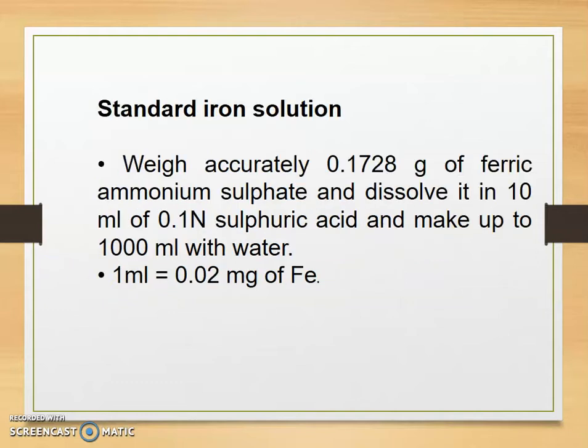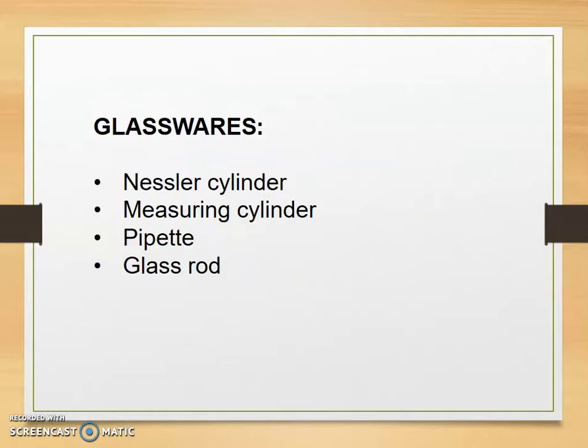Now for standard iron solution we have to prepare it. For that, weigh accurately 0.1728 grams of ferric ammonium sulfate and dissolve it in 10 ml of 0.1 normal sulfuric acid and make up to 1000 ml with water. 1 ml equals 0.02 milligram of ferrous. Glassware required: Nessler cylinder, measuring cylinder, pipette, glass rod. Now for the actual practical we move towards laboratory.